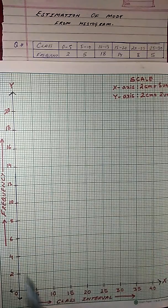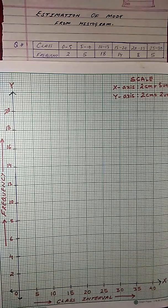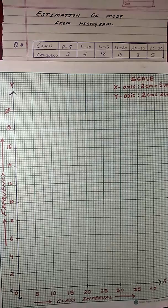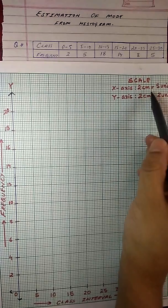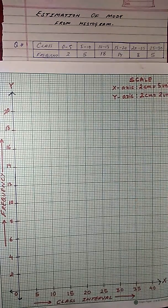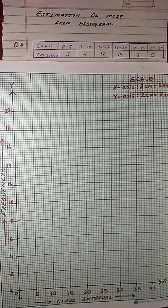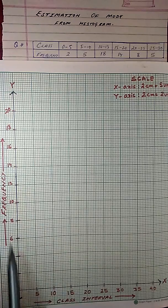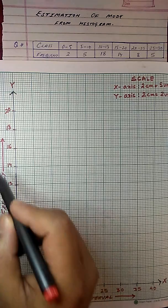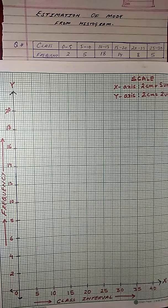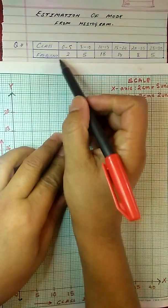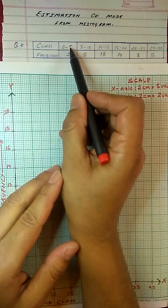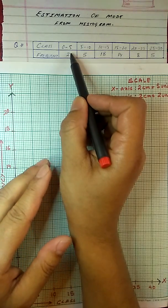Now the scale, the class interval and the frequency are the general terms that I have used for this graph. For particular cases, you might have to write the particular term. For example, if this is the marks of students, then you should write marks, and if this is the number of boys, then you should write number of boys. Now with the data that we have, we will start plotting small boxes with the class interval and the corresponding frequency.